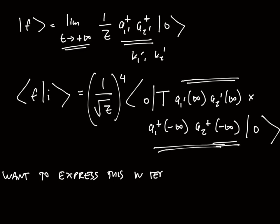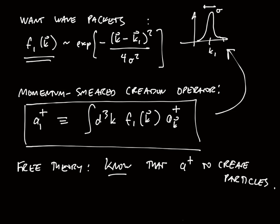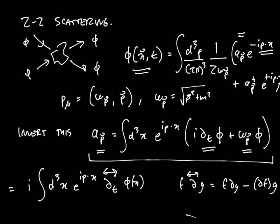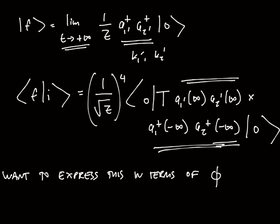So now what we're trying to do is we want to express this matrix element in terms of the field φ. Here I have these operators a₁, a₂, a₁', a₂' - I want to use the formula that I derived previously, in other words this formula right here. Use that formula to express everything here in terms of the field φ. So let's do that.